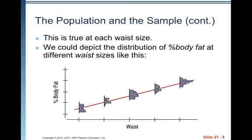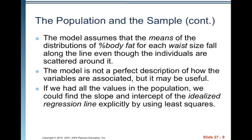This is true for each waist size. So here we've got the different waist sizes. Here's those distributions kind of represented as histograms of the Y values, the percent body fat values. The model assumes that the means of the distributions of percent body fat for each waist size fall along the line even though the individuals are scattered about it.